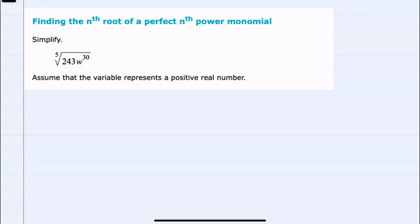In this video, I'll help you with the Aleks problem type called finding the nth root of a perfect nth power monomial. We have our expression here to simplify: find the fifth root of 243w to the 30th power.